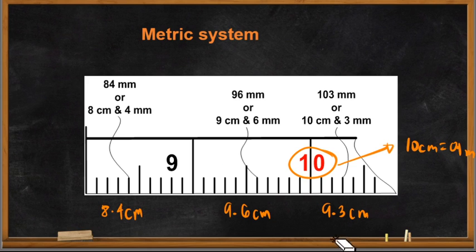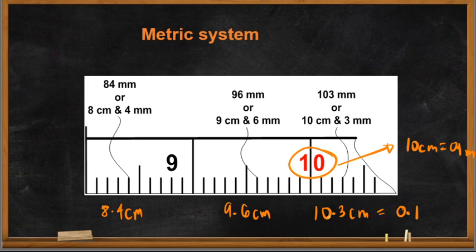This measure here is 10 cm, not 9 — sorry for that. So at 10 cm we have 0.1 meters, and with two additional lines that gives 0.103 meters. That is how you read these measurements. We will now go to an example.